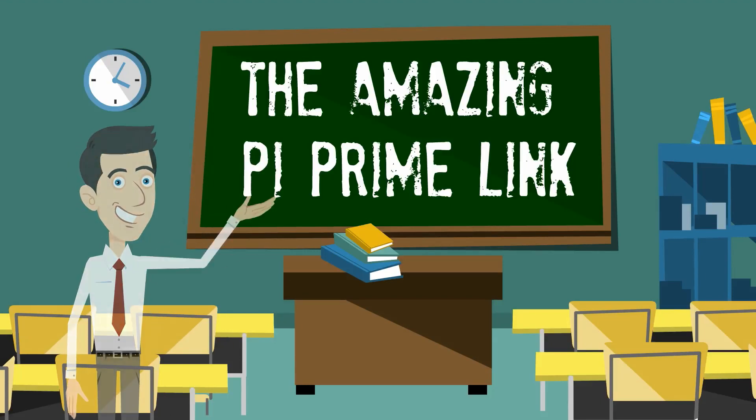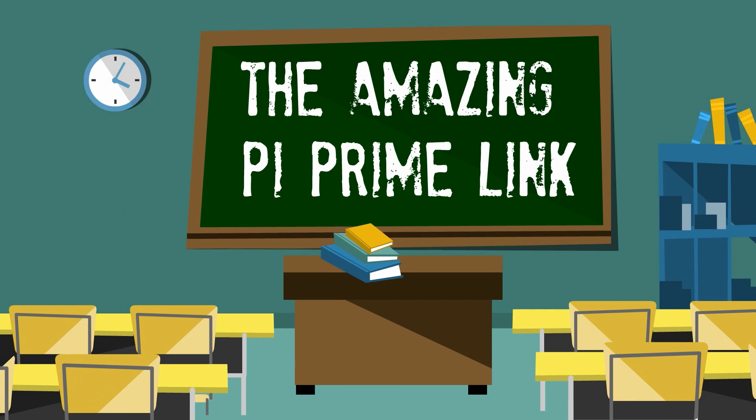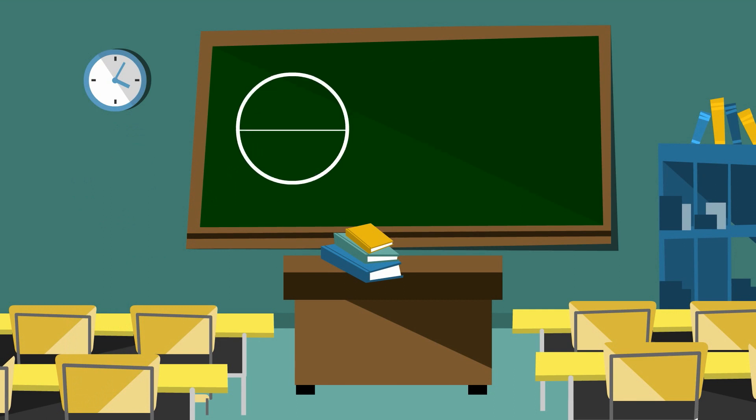Welcome one and all to the amazing pi prime link. Pi is an important number because it's the circumference of a circle divided by its diameter. The primes are those numbers that are only divisible by one and the number itself.